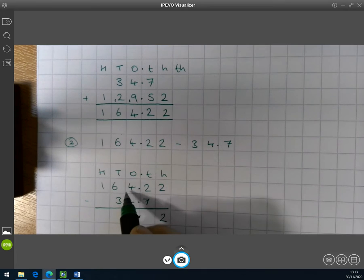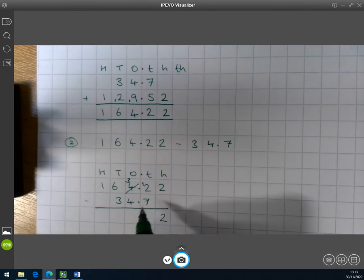So I've got my decimal point there. We need to exchange one of these ones. So we've now got three ones left. And this one has been split up into 10 tenths. That means now we've got 12 tenths. Take away 7 tenths is 5 tenths.